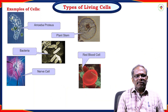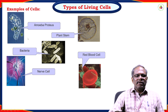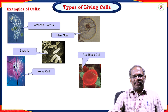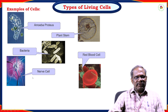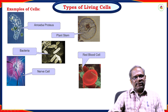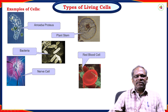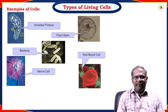Some examples of living cells: the first is the amoeba protease cell, and the plant stem — these are examples of eukaryotic cells. Bacteria is an example of a prokaryotic cell. The nervous cell and red blood cells (RBC) are examples of eukaryotic cells. These are some of the examples of living cells.